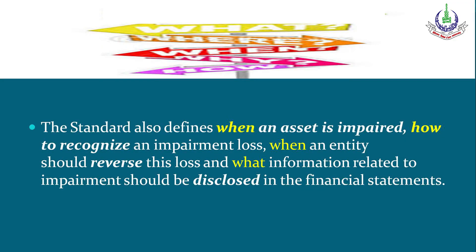The standard also defines: when an asset is impaired; how to recognize an impairment loss; when an entity should reverse this loss; and what information related to impairment should be disclosed in the financial statements. So there are four things: when — which depends on indications (internal and external); how to recognize and allocate the impairment loss; when to reverse; and what impairment-related information should be disclosed.